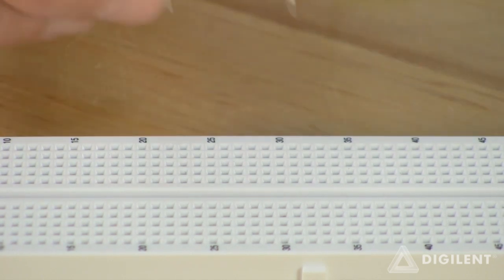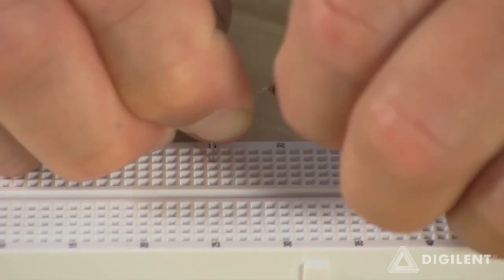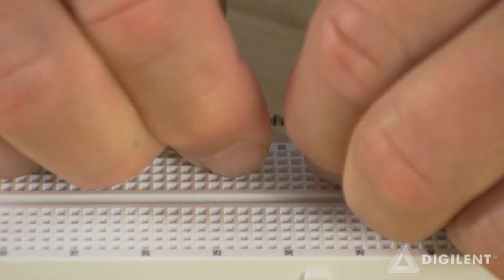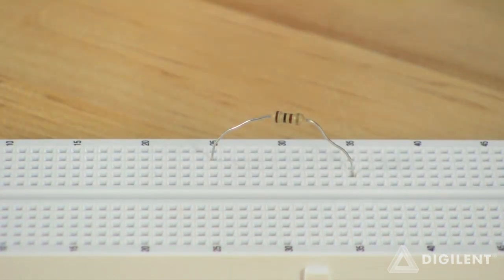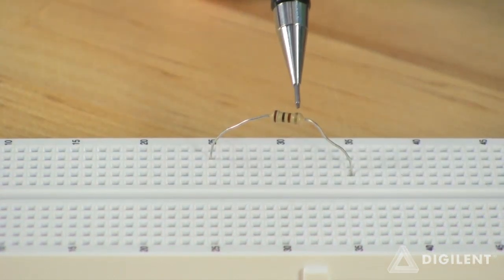Our resistor has a resistance of 100 ohms. Its color bands are brown, black, brown, gold.